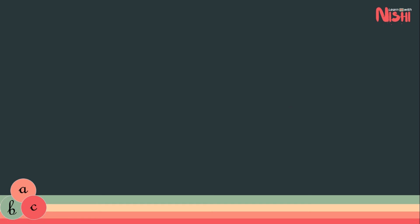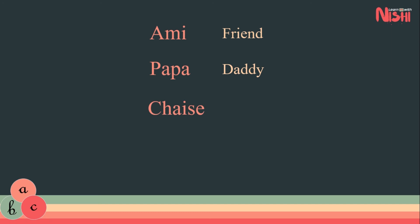Now that we've learned the alphabet, let's spell some words. Here is the first one: A-M-I, ami, which means friend. The next one is P-A-P-A, papa, which means daddy. The next one is C-H-A-I-S-E, chaise, which means chair. And the last one — try it yourself. Okay, let me help you: T-A-B-L-E-A-U, tableau, which means table.